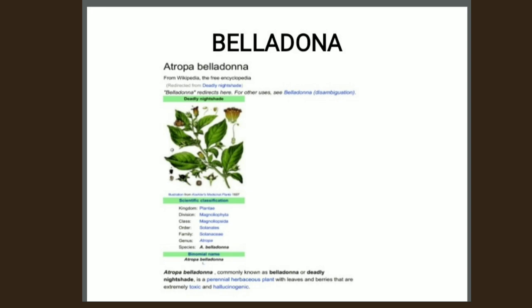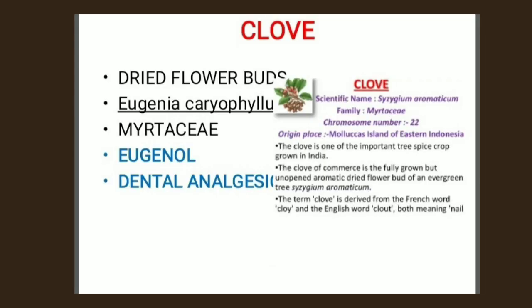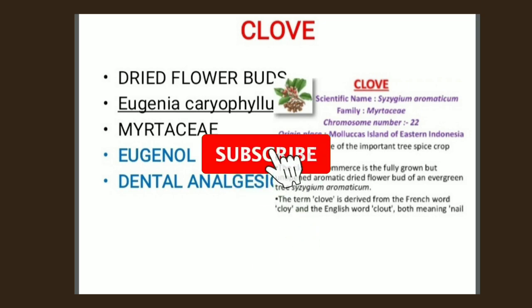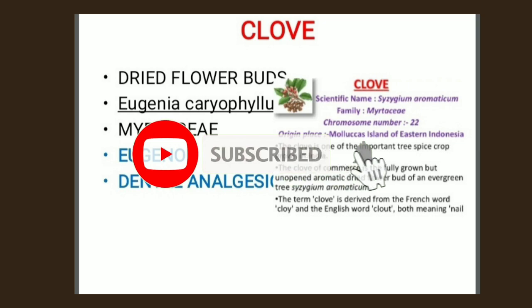Now I'm going to tell you about the volatile oils. The first one is clove. Clove consists of dried flower buds of Eugenia caryophyllus. Its family is Myrtaceae and it contains volatile oils.